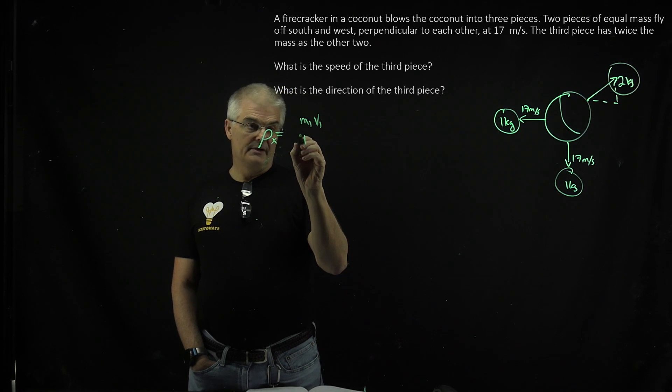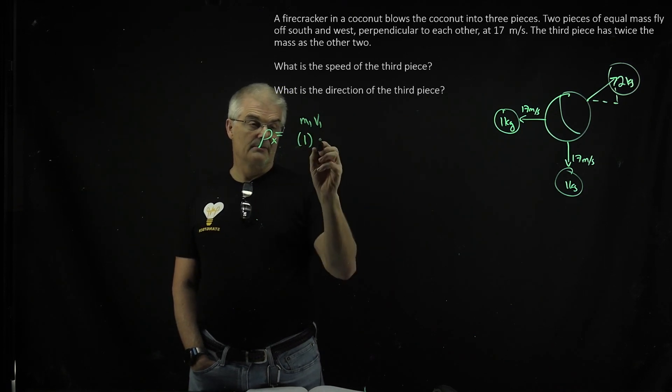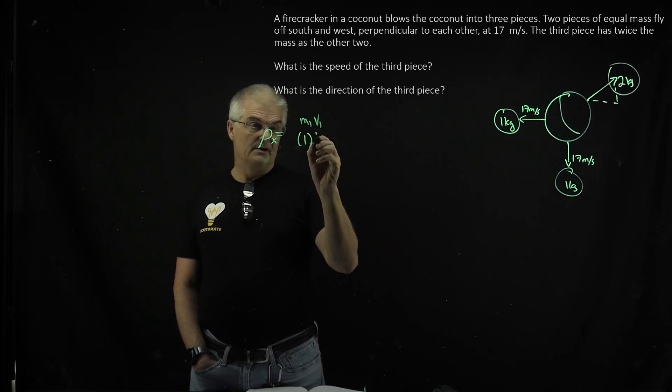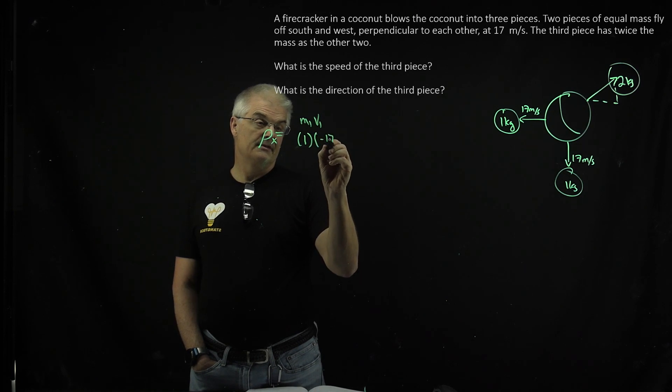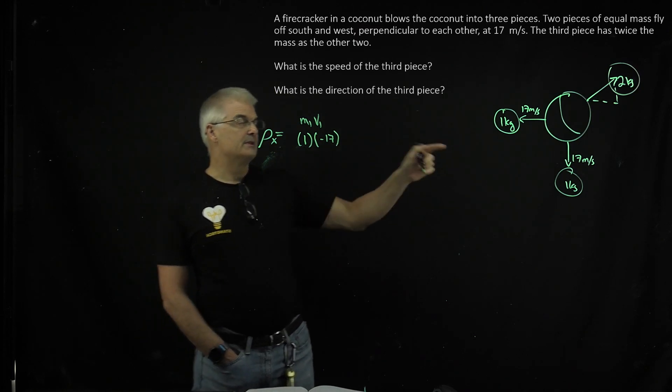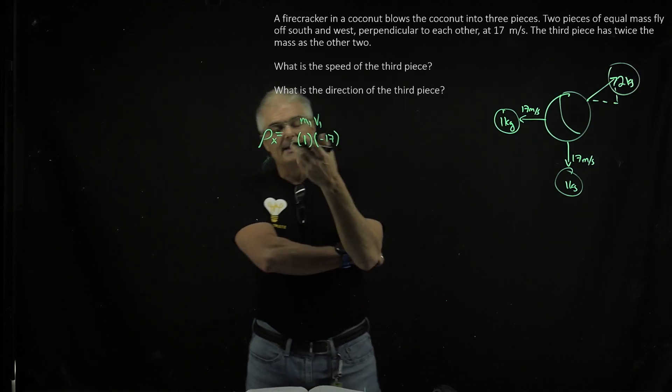It's going to be one kilogram times v1, which is, now watch this, negative 17. And that has to equal the momentum on the other side, but it has to, well, it has to add up to zero.